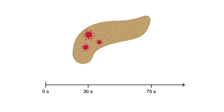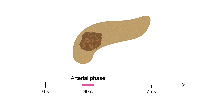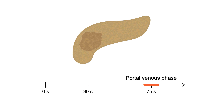Staging pancreas adenocarcinoma requires both late arterial and portal venous phase imaging. The late arterial phase is most often the best phase to see a mass in the pancreas. At this time point, the mass will usually enhance less, appearing darker than the surrounding pancreas tissue. In the portal venous phase, the mass often blends in with the rest of the pancreas and can be hard to see.